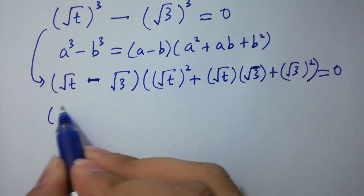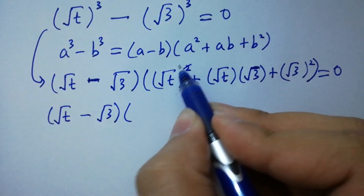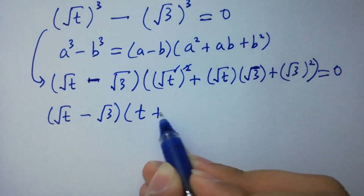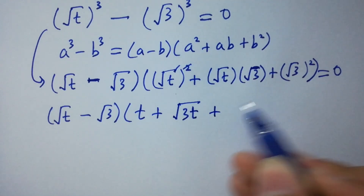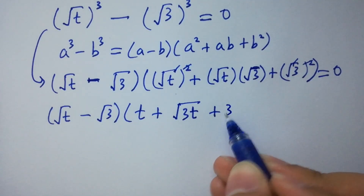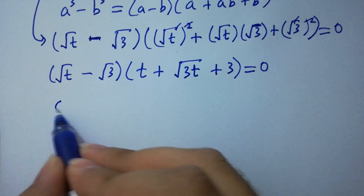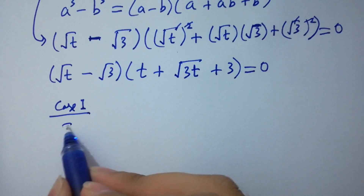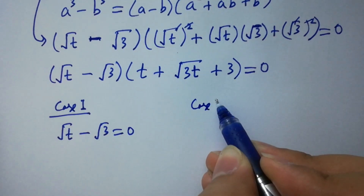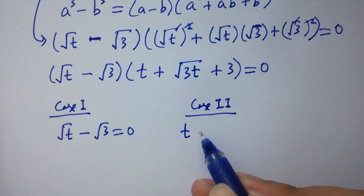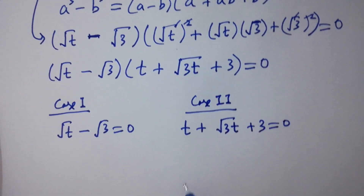Simplifying, we get: (square root of t minus square root of 3) times (t plus square root of 3t plus 3) equals 0. This gives us two cases. Case 1: square root of t minus square root of 3 equals 0. Case 2: t plus square root of 3t plus 3 equals 0.